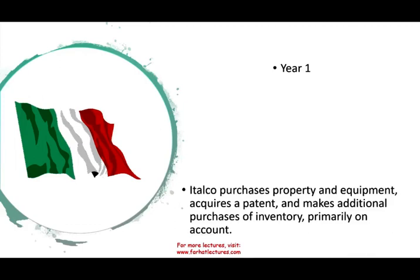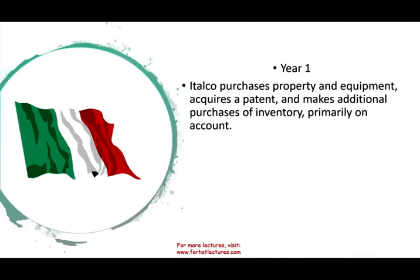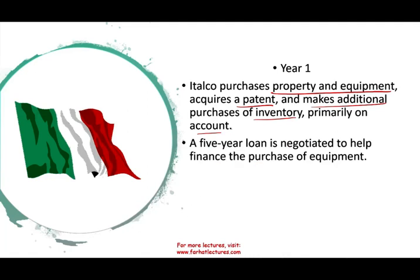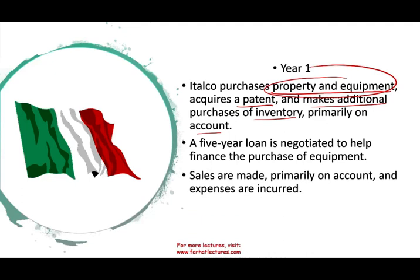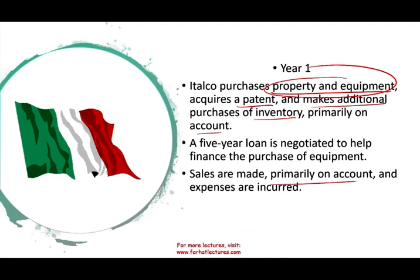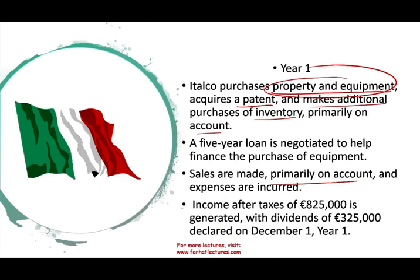Throughout the year, the company operated their business. They purchased property and equipment, purchased a patent, made additional purchases of inventory primarily on account, and negotiated a five-year loan to help purchase the equipment. They made sales primarily on account and expenses were incurred. Income after taxes was 825,000 euros and dividends of 325,000 euros were declared on December 1st.